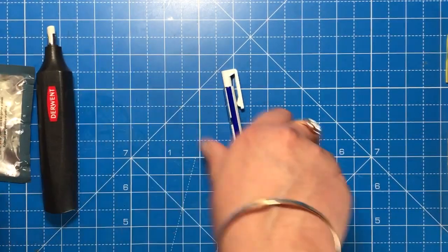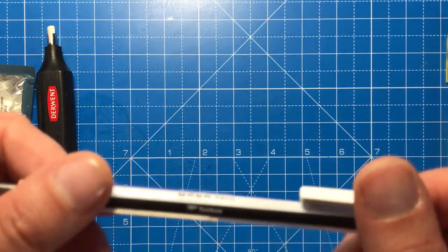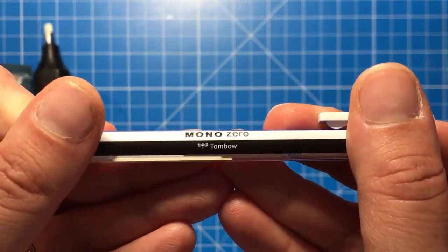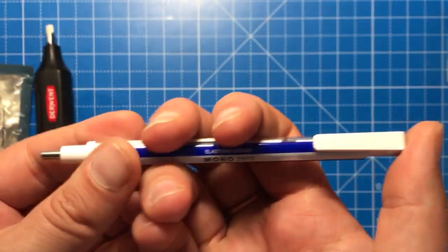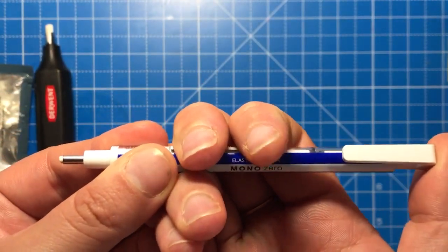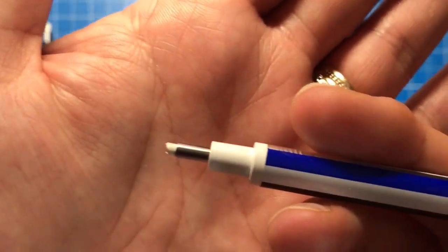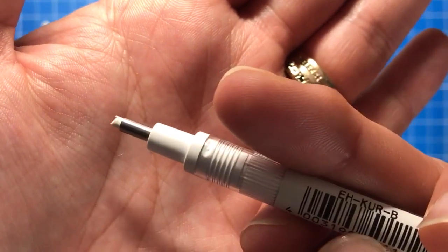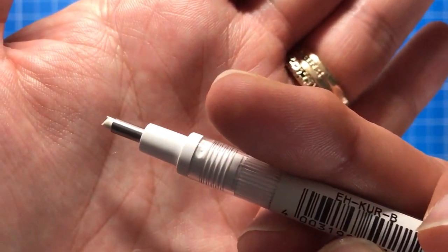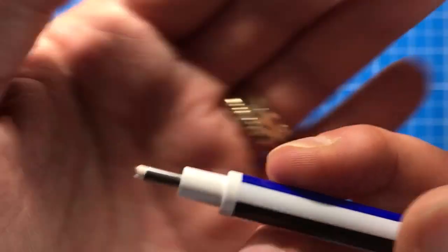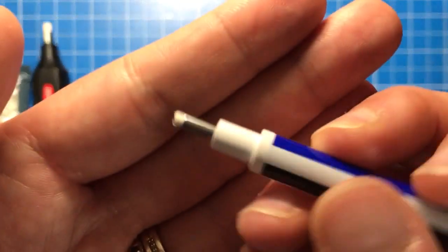This is for more intricate details. This is a Tombow Mono Zero eraser, it works a little bit like a mechanical pencil. You give the top a few clicks and out comes this very tiny ultra fine 2.3mm eraser.